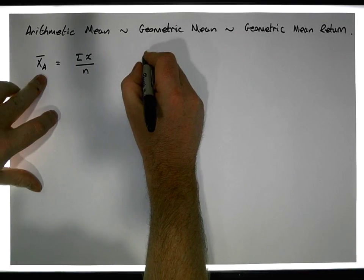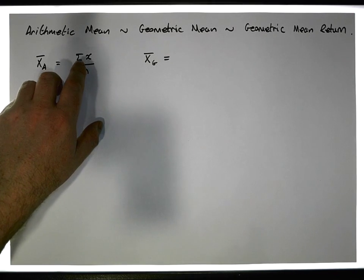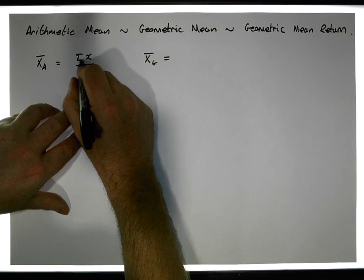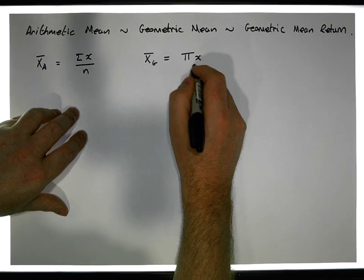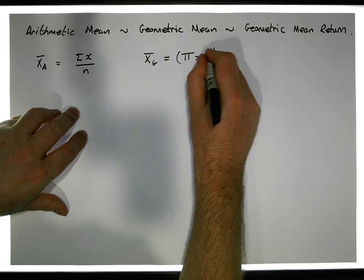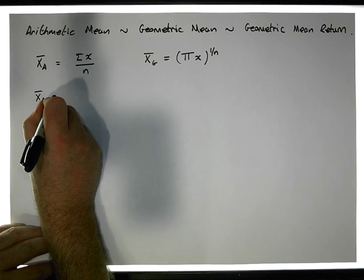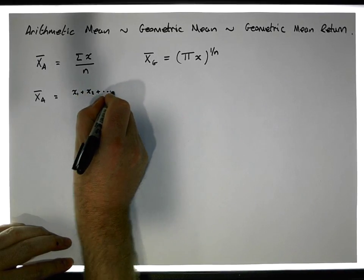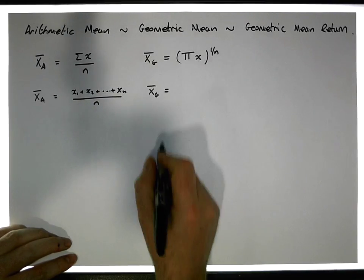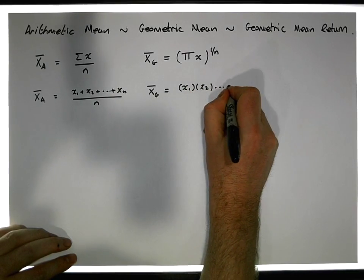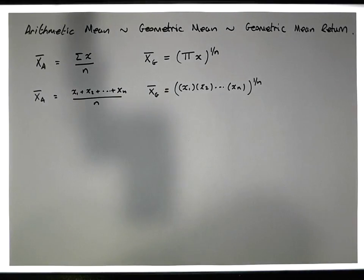The geometric mean, on the other hand, is an alternative way to calculate a mean value. Let's say x̄_g. The geometric mean is the product of all the terms — we use a product notation here — it's the product of all the observations raised to the power of 1 over n, so it's the nth root of the product of all the observations. Expanding: x̄_a is (x₁ + x₂ + ... + xₙ) / n, whereas x̄_g is (x₁ × x₂ × ... × xₙ) raised to the power of 1/n.